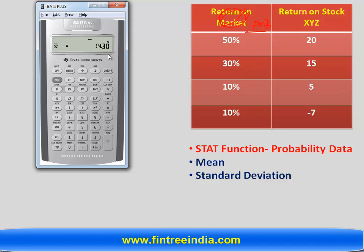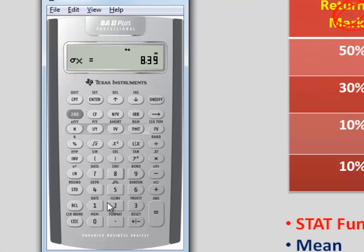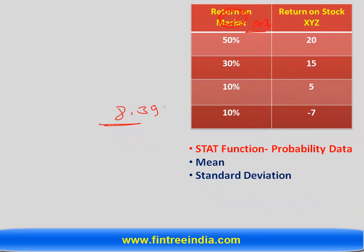X bar 14.30 this is a weighted average of this data Sx this is sample standard deviation and this does not really mean anything what we have to look for is this Sigma X in this case and we know that standard deviation of this probability data is 8.39